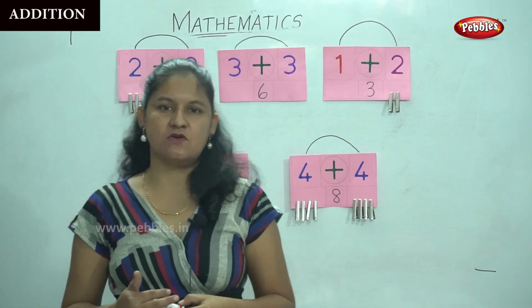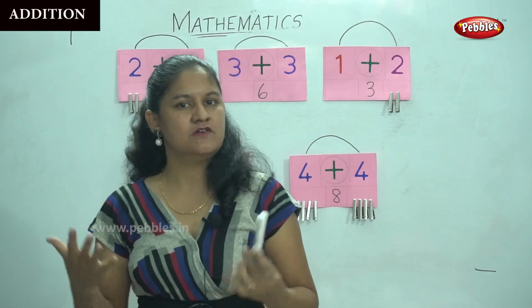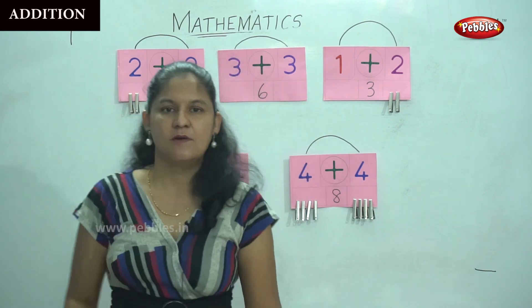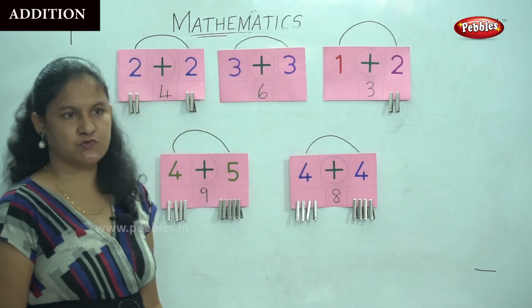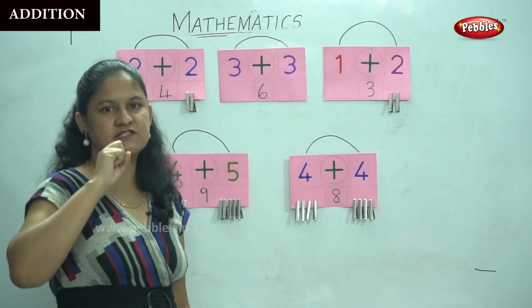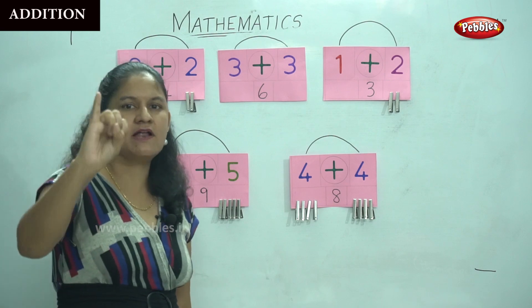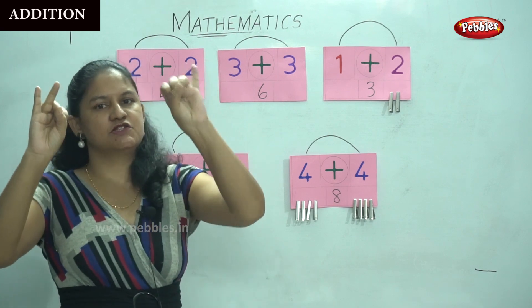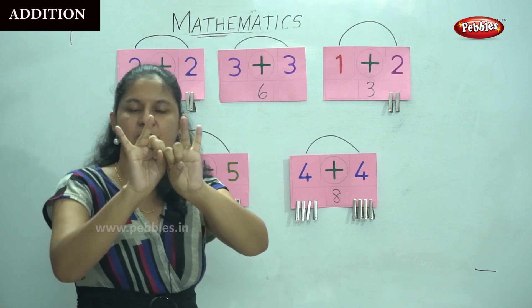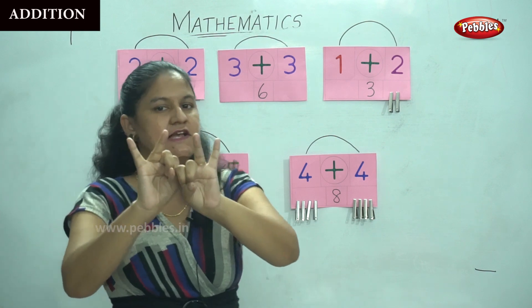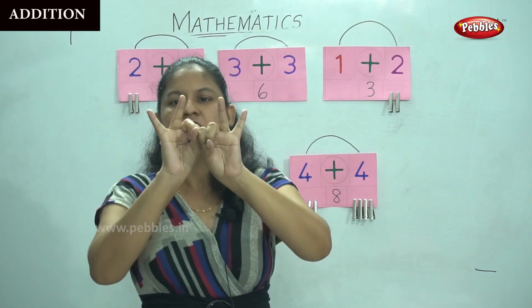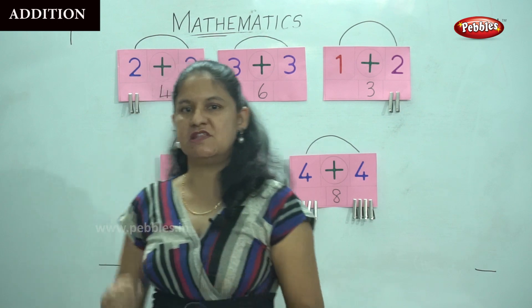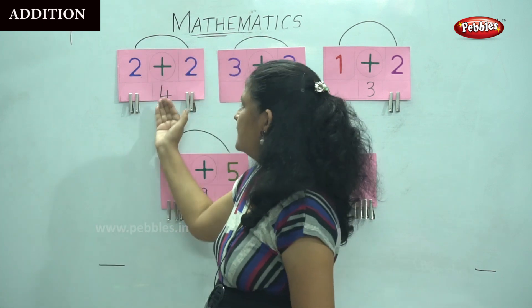You could even count with your fingers. For example, two plus two — I will count two fingers and two more fingers. Counting the fingers that are up: one, two, three, four — which gives me the answer four. This addition I am doing using my fingers to count.